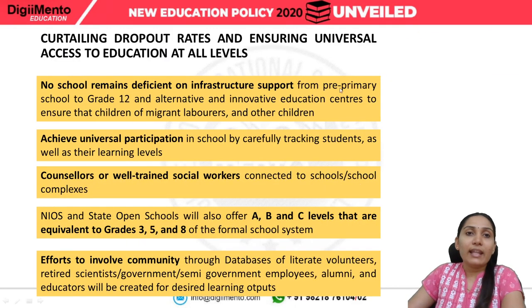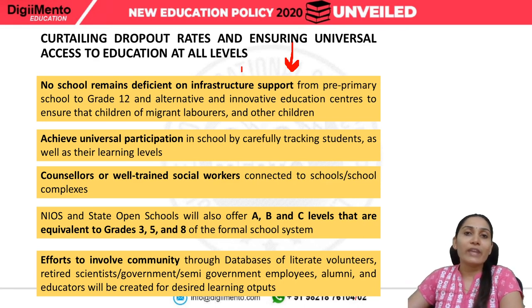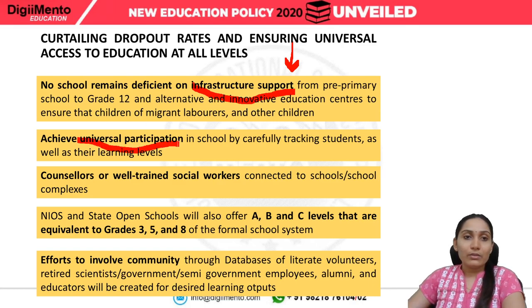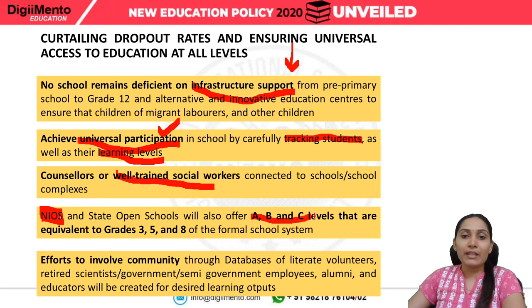To curtail dropout rates and ensure universal access, the government will provide infrastructural support and track students as well as their learning levels. Social workers and counselors will be appointed to deal with the psychological issues of students. NIOS — the National Institute of Open Schooling — and state open schools will offer A, B, and C levels equivalent to classes 3, 5, and 8 of the formal school system. Community participation will also be ensured.